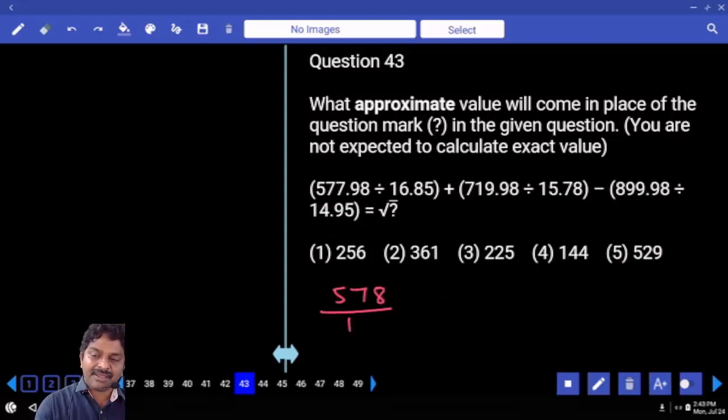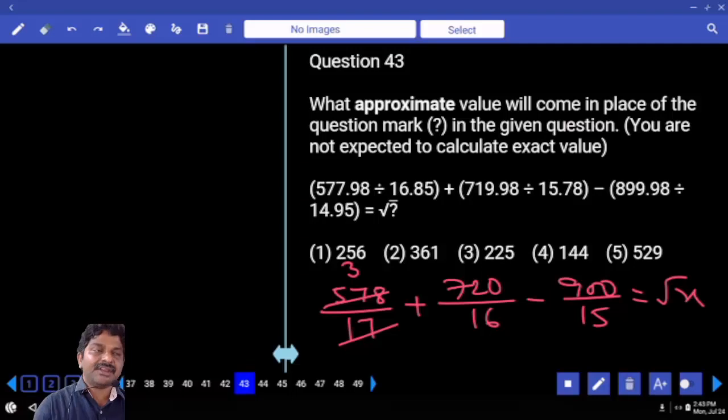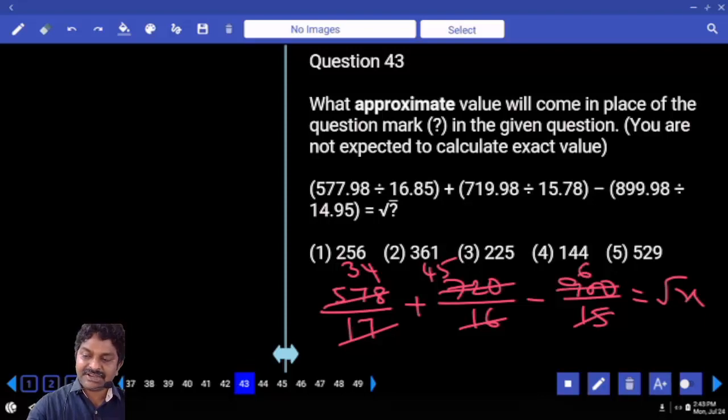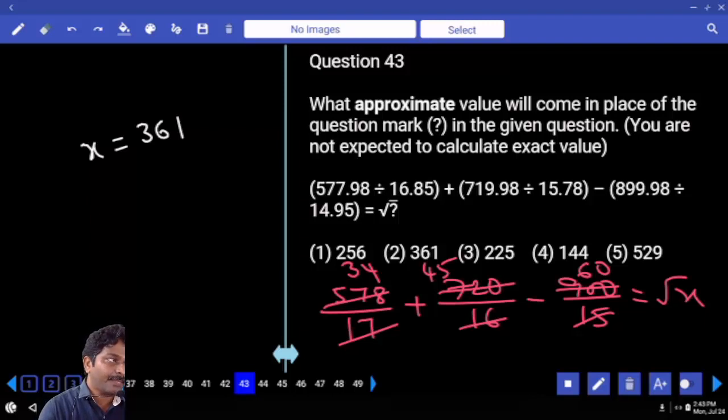Divided by plus 720 by minus is equal to root x. 17, 3 times 68, 4 times 16, 4 times 64, 80, 5 times 60 times 79 minus 60 equals 19. X is equal to 19 squared, which is 361.